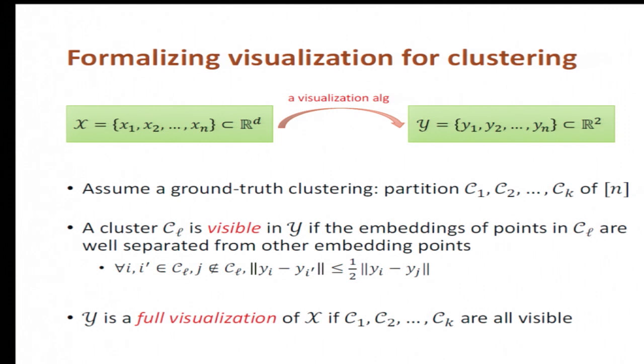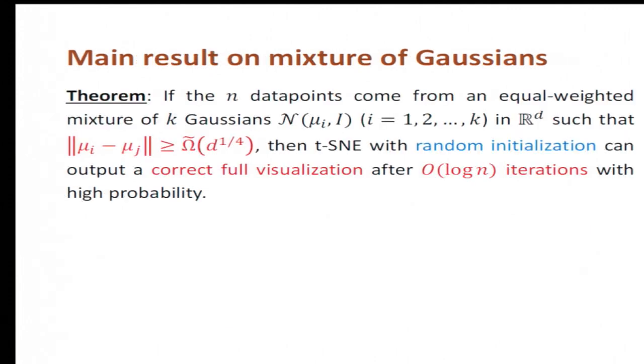So with this formalization, we can now state our main results on classical models like a mixture of Gaussians. Our theorem says that if the n data points are coming from an equal-weighted mixture of k Gaussians with identity covariance, such that the mean separation between every two Gaussians is at least d to the power of one quarter up to some logarithmic factor,